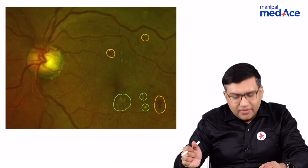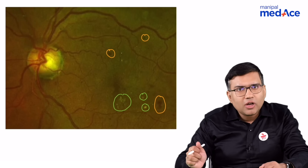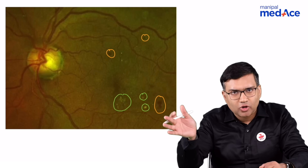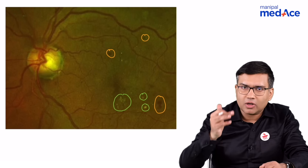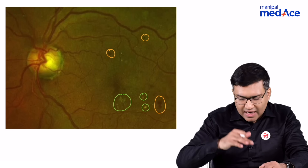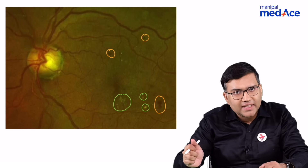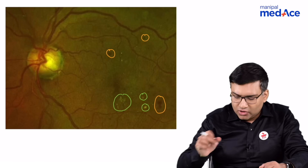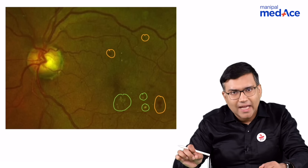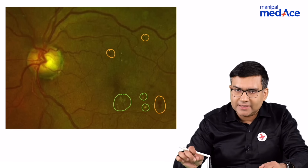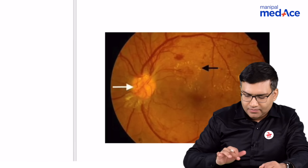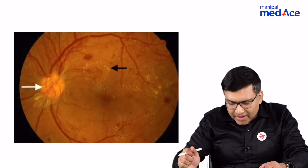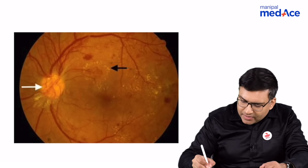Whenever we have a non-proliferative diabetic retinopathy, we have various micro-aneurysms, dot blot hemorrhages, and hard exudates all around the fundus. So this is a non-proliferative diabetic retinopathy. Now see this second image.